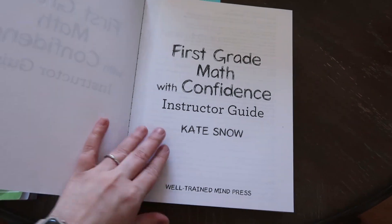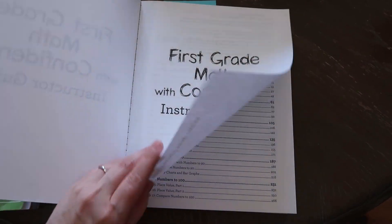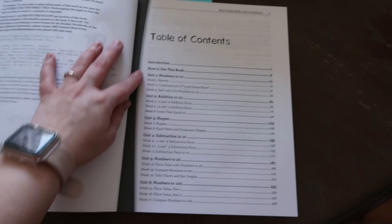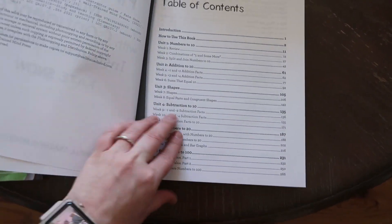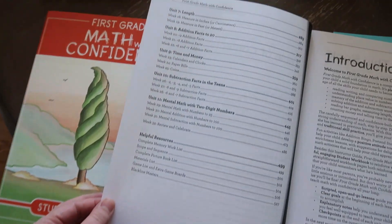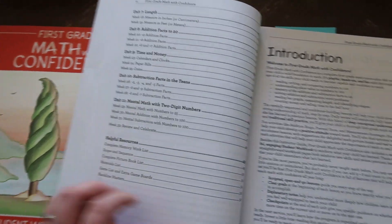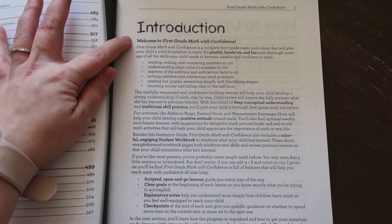Okay, so here is the instructor guide. This is by Kate Snow at the Well-Trained Mind. We have our table of contents, so you can see everything you're going to be doing for the entire school year. We have the introduction.